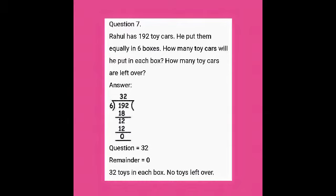Answer: total number of toy cars = 192, number of boxes = 6. Number of toys in each box = 192 ÷ 6. We need to know the table of 6. In 19, how many 6s are there? Three — 3 × 6 = 18. Subtracting: 19 − 18 = 1. Take down the 2. Now we have 12 — in the 6 table, 12 comes 2 times.